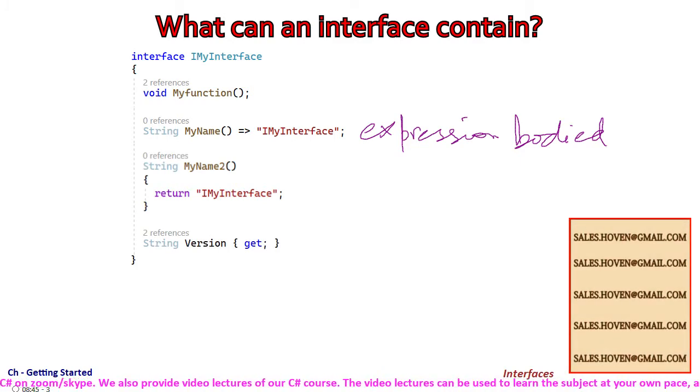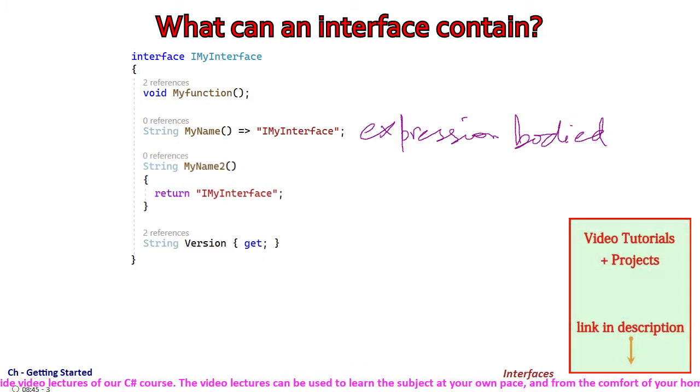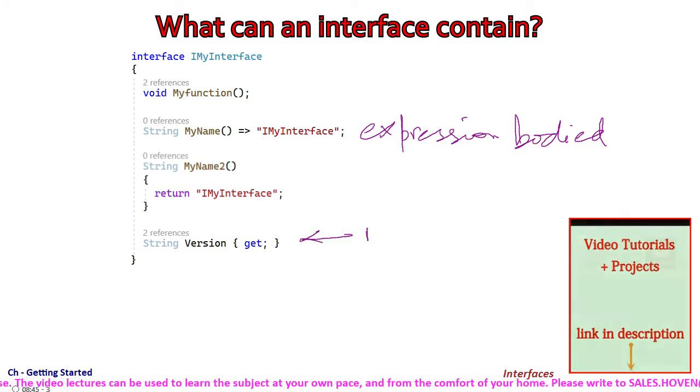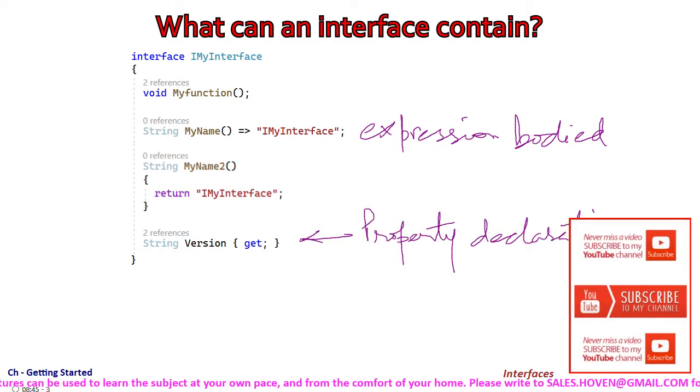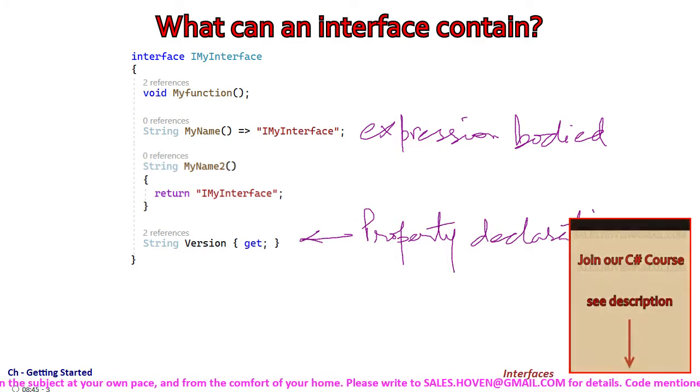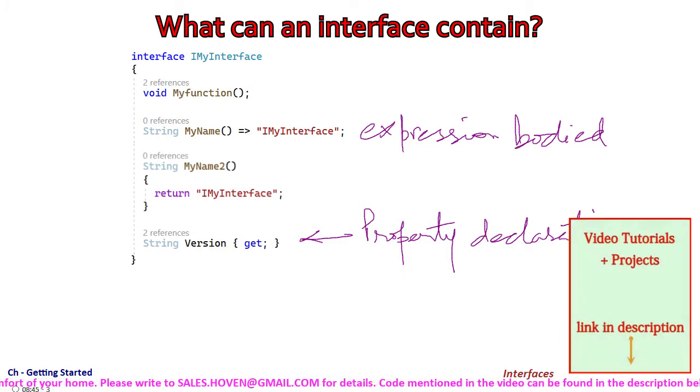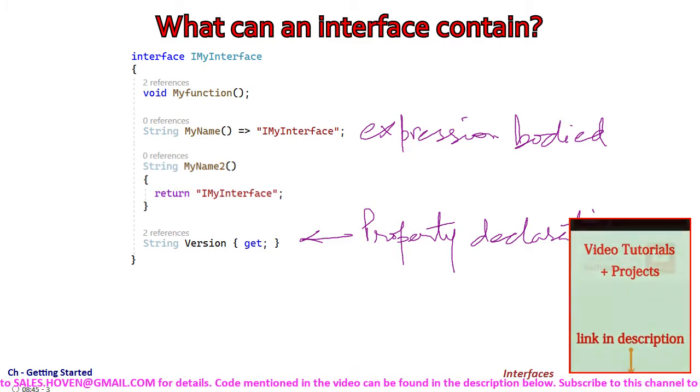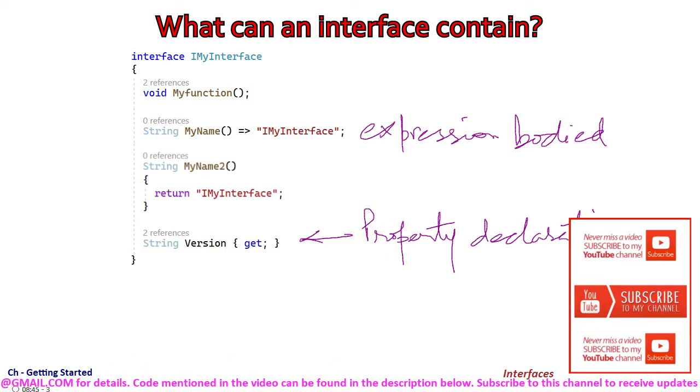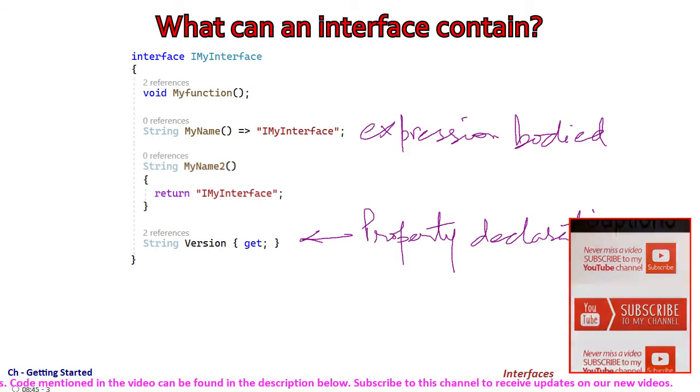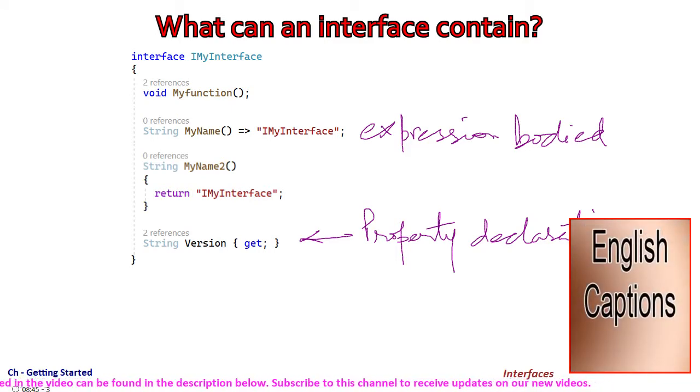An interface can contain properties as well. It can provide default implementations. If no implementation is provided, then the compiler treats it as a signature declaration, which makes it compulsory for an implementing class to provide the body. Here we have added a property called version. The interface hasn't provided the body for the getter function, so it is now compulsory for the implementing class to provide its body.